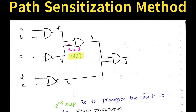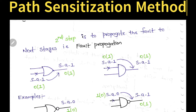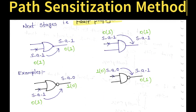Now the second step is fault propagation. Fault propagation means this stuck-at-1 should be propagated forward. From the stuck-at point, the fault travels through the path — first to node I, then to node J. So the second step is to propagate the fault to the next stage, all the way to the output side. For that, you need to know the fault equivalence model.